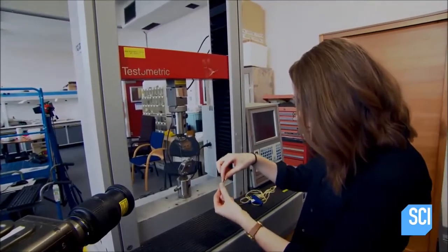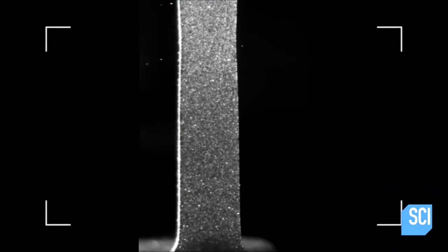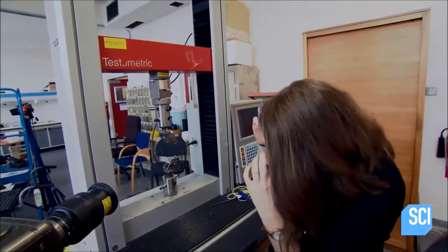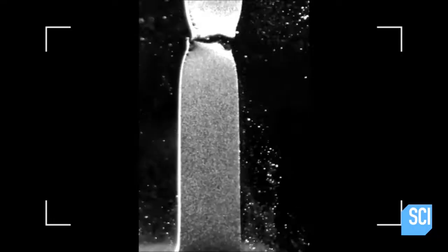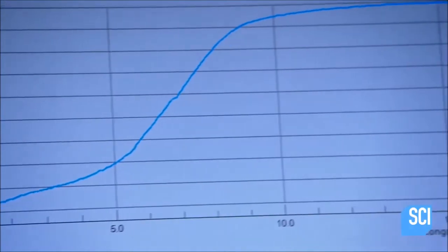So it's stretching apart. You can see it's straightening the wire out. Oh! Okay, there it's gone. The graph reveals the steel broke under 110 pounds of force.